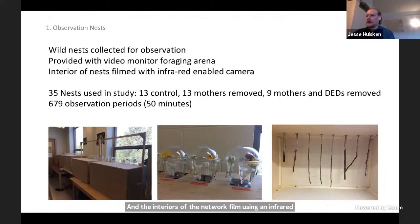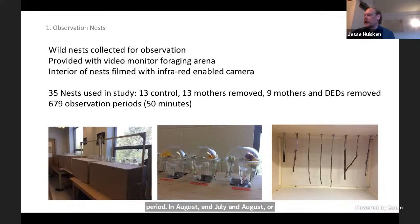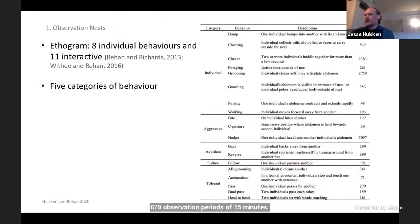In total we had 35 nests with 13 control, 13 with mothers removed, and 9 with both mothers and dwarf eldest daughters removed. We filmed them during the late social cohabitation period in July and August, for a cumulative 679 observation periods of 50 minutes. We then scored behaviors using a previous ethogram and also found a number of novel behaviors. We used previous research to categorize these behaviors into five categories: individual behaviors, aggressive behaviors, avoidant, following, and tolerant behaviors.